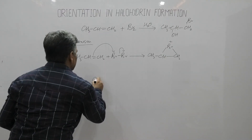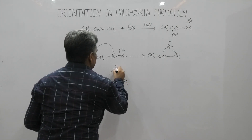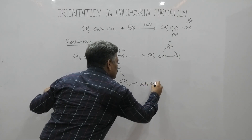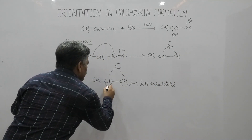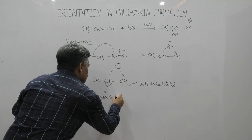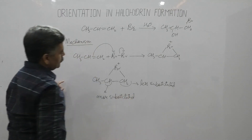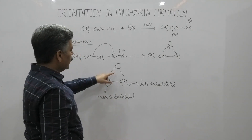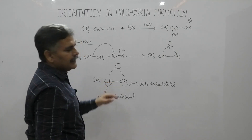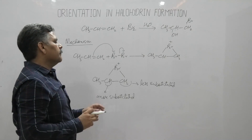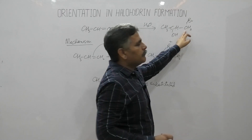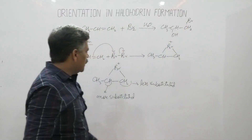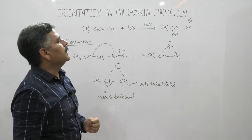In the intermediate CH₃-CH⁺-CH₂Br, the carbon bearing bromine is less substituted. When bromine attaches at the less substituted carbon, it gives the more stable secondary carbocation intermediate, compared to attachment at the more substituted carbon which gives the less stable primary carbocation. The only reason for bromine attaching at the less substituted carbon is the stability of the intermediate.